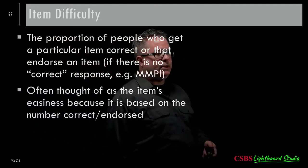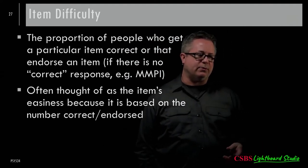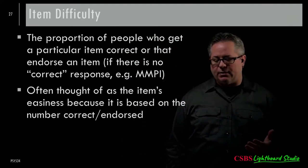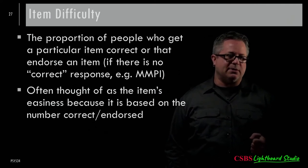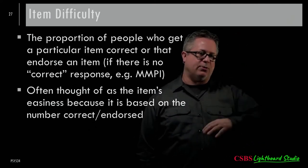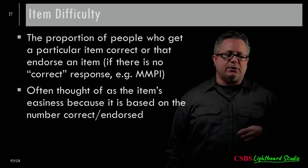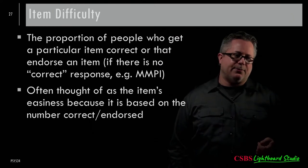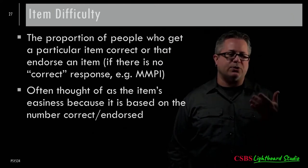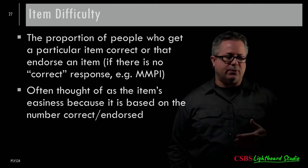Item difficulty is the proportion of people who get a particular item correct — or endorse an item when there's no correct answer, like on the MMPI with yes/no questions. The higher the proportion endorsing the item, the easier it is. The lower the proportion, the harder or more difficult the item is.